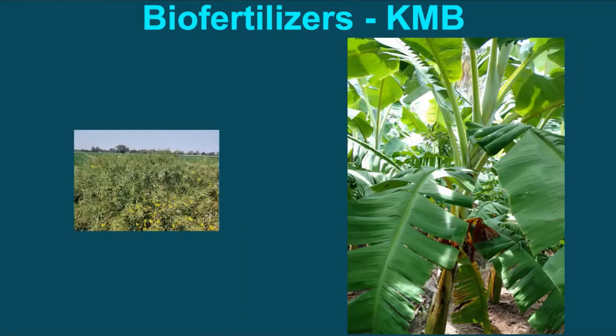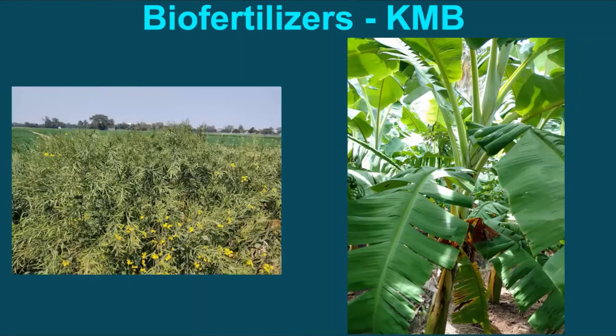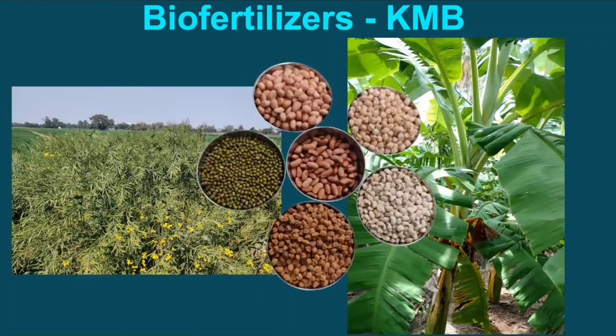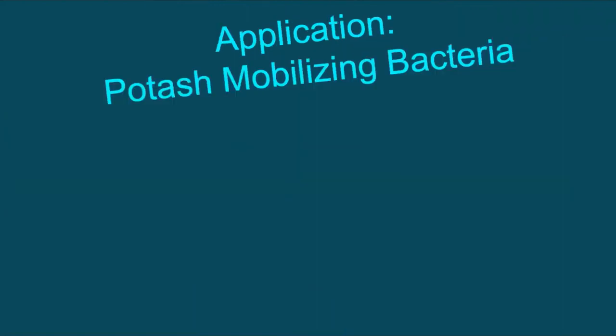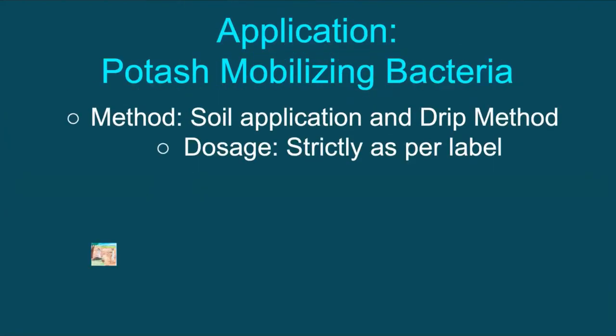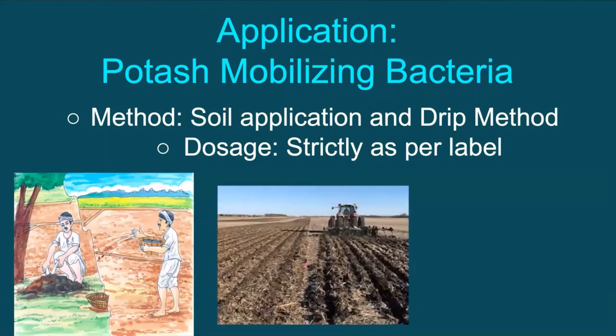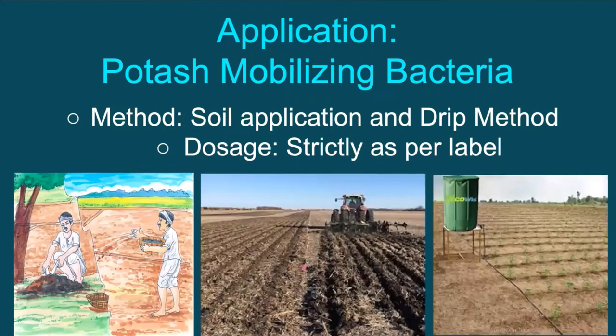Application of KMB further helps to bring down the cost of cultivation, increase yield and quality of produce, like better color, good taste, flavor, longer shelf life, even at lower doses of conventional fertilizers. KMB to be applied in the soil or through drip method, and doses should strictly be as per the recommendations only.